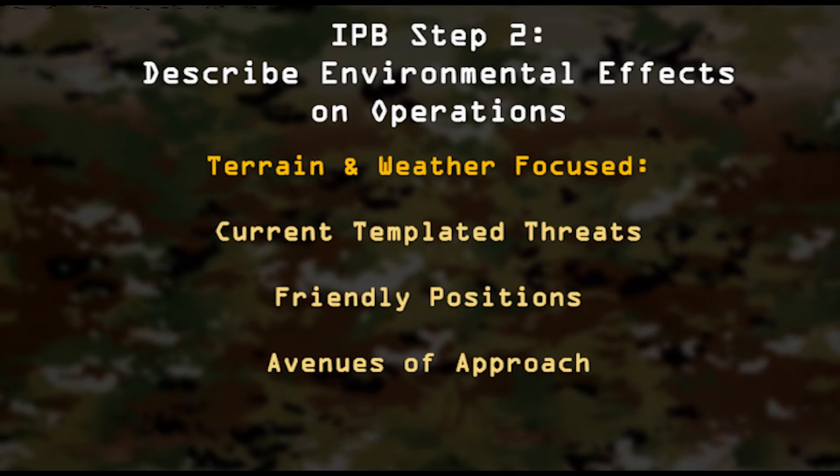Step 2 of IPB determines characteristics of the OE that can affect friendly and threat operations. Analysis focuses on existing and projected conditions in the AO and AOI. This step is terrain and weather focused against current templated threat forces, friendly positions, and avenues of approach between the two forces through application of the OACOC analysis method on terrain.